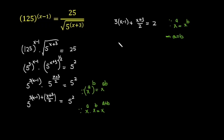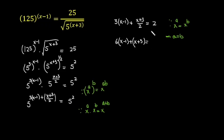I will multiply the whole equation by 2 to eliminate the denominator. Multiplying gives: 2 times 3 times x minus 1 plus x plus 3 equals 2 times 2, which is 4. The 2 cancels the denominator on the left side, leaving x plus 3. Opening the brackets gives: 6x minus 6 plus x plus 3 equals 4.